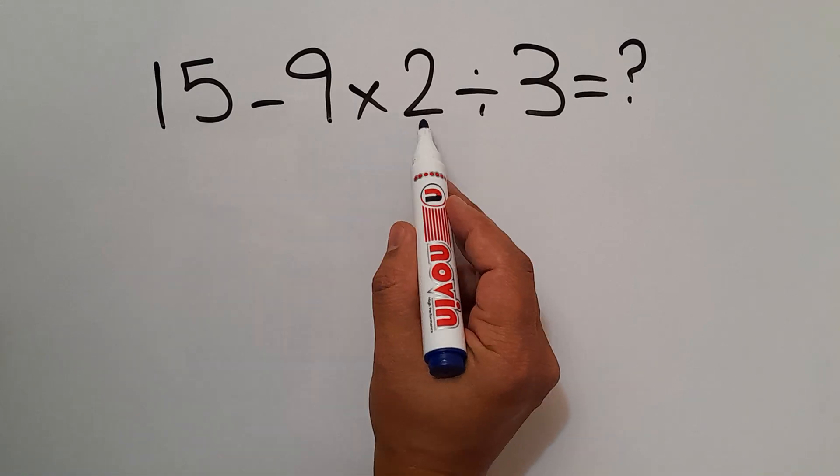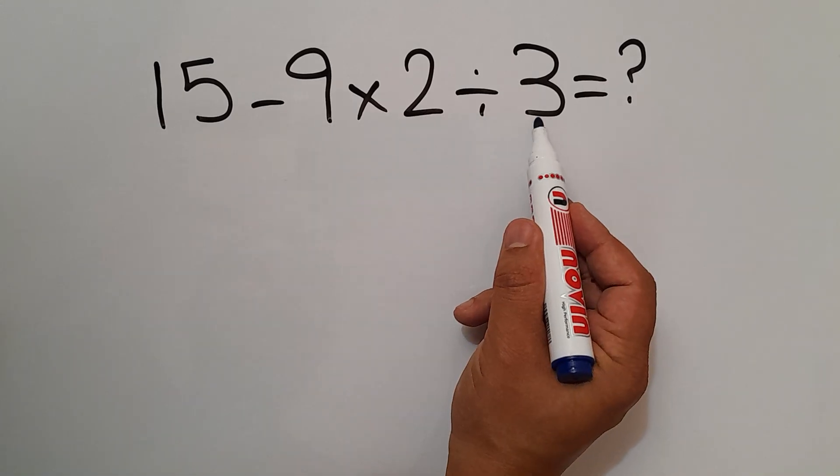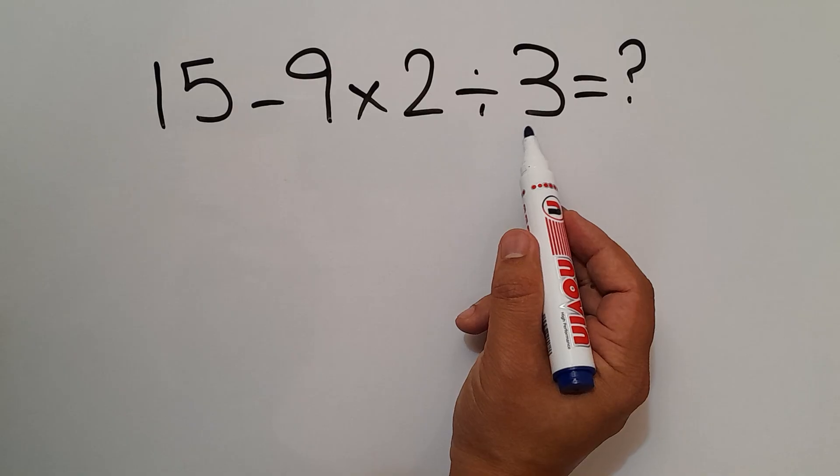15 minus 9 times 2 divided by 3. Are you ready to solve? Let's get started.